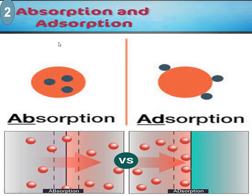Now, what do absorption and adsorption mean? In absorption, the particles get into a bulk. But adsorption is different — in adsorption, which means 'add on', the particles of solute add on the surface. They do not get into the surface but they add on the surface. So the main difference: in absorption particles get into the surface, but in adsorption particles add on the surface.